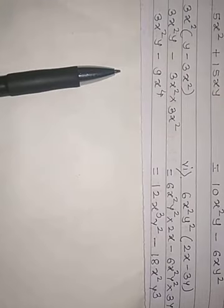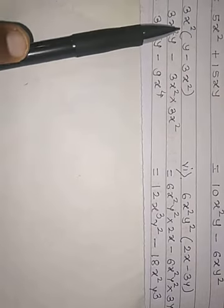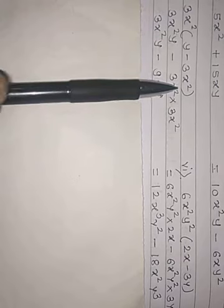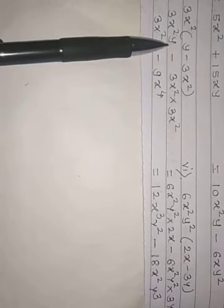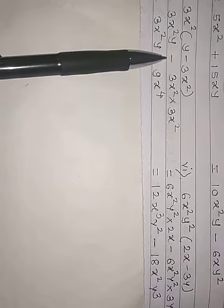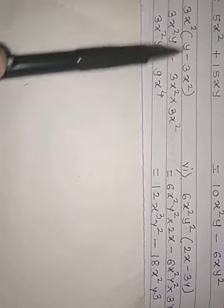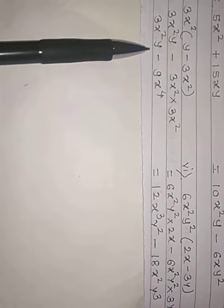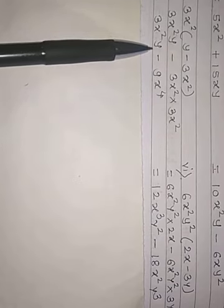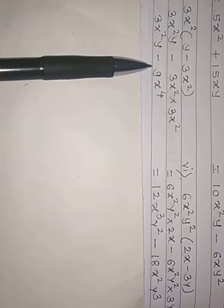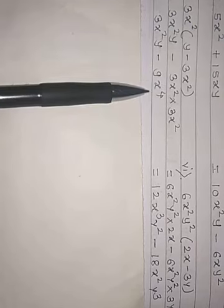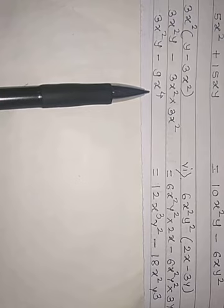Next example: 3x squared into bracket (y minus 3x squared). So 3x squared into y minus 3x squared into 3x squared. So 3x squared y as it is, minus 3 threes are 9, x squared into x squared it will be x to the power 4.